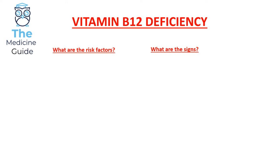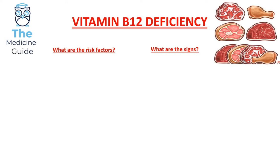Sources of vitamin B12 found in our everyday diet include red meat such as pork and beef, as well as dairy sources such as eggs, cheese, and yogurts.